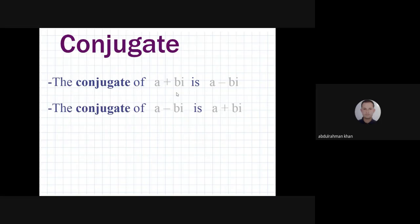For a complex number a plus bi, we have to change the sign of the imaginary part to get the conjugate. We change the plus to minus to get the conjugate of complex numbers.